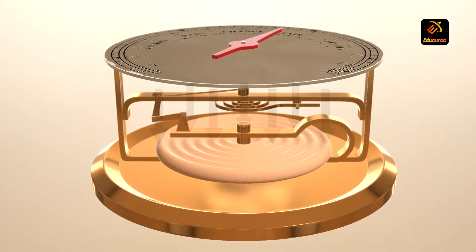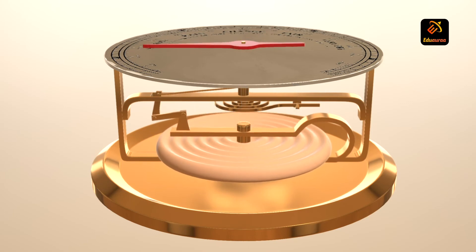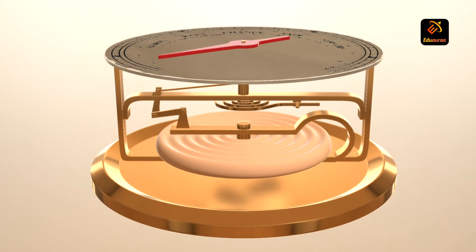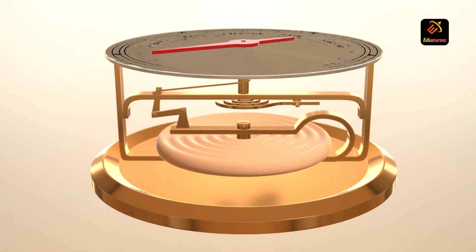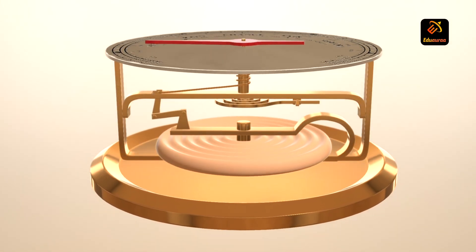There is a dial. The dial shows a pointer. The pointer is connected by a chain. This chain is connected to the system of levers, and the system of levers is connected to the diaphragm.